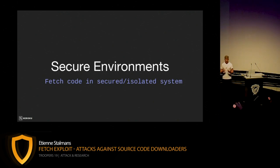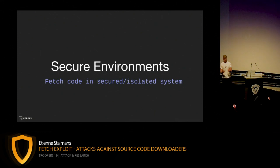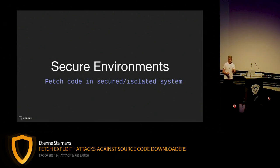Source code should also be fetched in a secure or isolated system. As I mentioned with the Docker example, if you're running docker build and pointing it at a git repository, that fetches and executes your build scripts in the same process on the same environment. If there's code execution during the download phase, your build phase is also compromised. You want to be fetching code in an isolated system, making sure the code hasn't been tainted in any way before you transfer it to your build system.